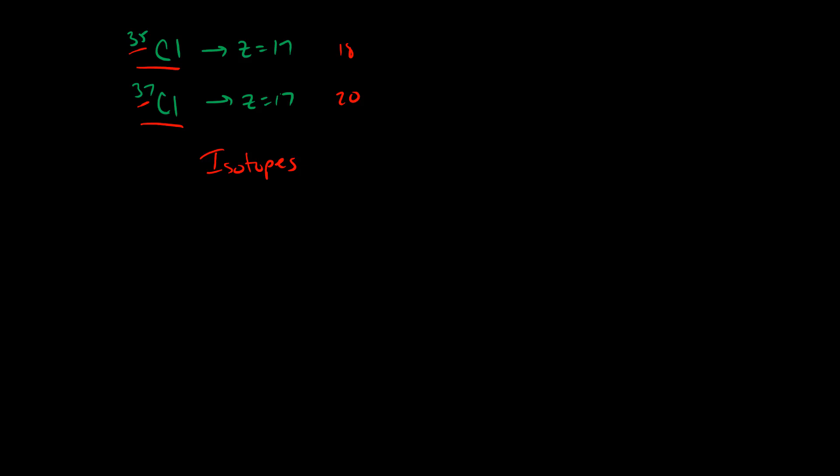The reason these two chlorine isotopes exist is because they're both pretty darn stable. In fact, if you were to scoop up a sample of pure chlorine, you would end up with a mixture of these two isotopes. Exactly 75.78% of the sample would be the chlorine-35 isotope, and the remaining 24.22% would be the chlorine-37 isotope.